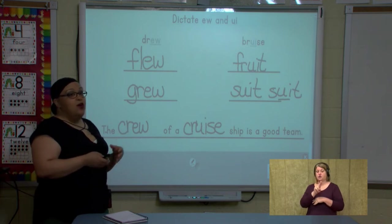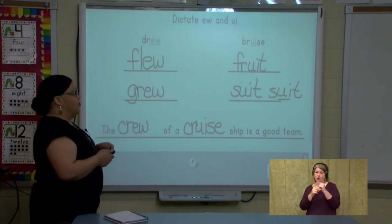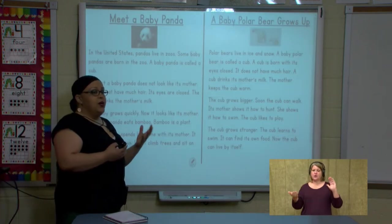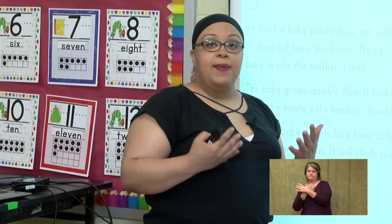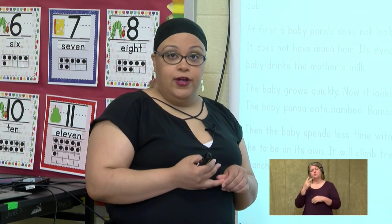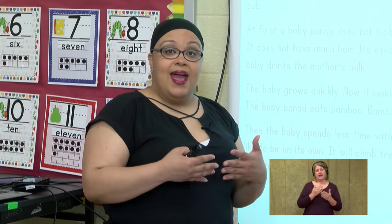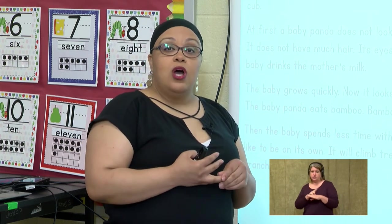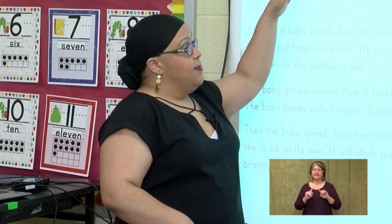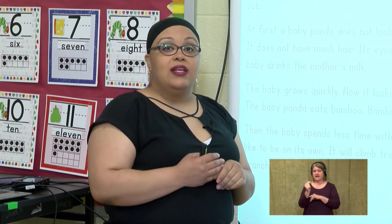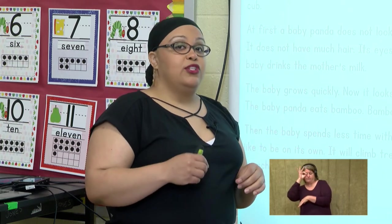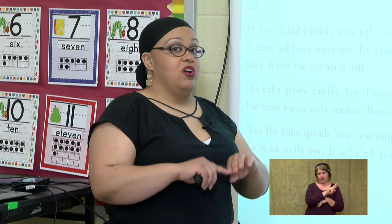Good job reading and writing words with oo. Remember, E-W goes at the end of words and U-I is in the middle. Continue practicing reading and writing with the oo sound. Let's jump into our comprehension. Last week we compared cats and dogs and looked at butterflies and moths. When we compare and contrast, we talk about how things are alike and how they are different. Today we're going to read about panda bears and polar bears, and listen for ways that they are the same and ways that they are different.